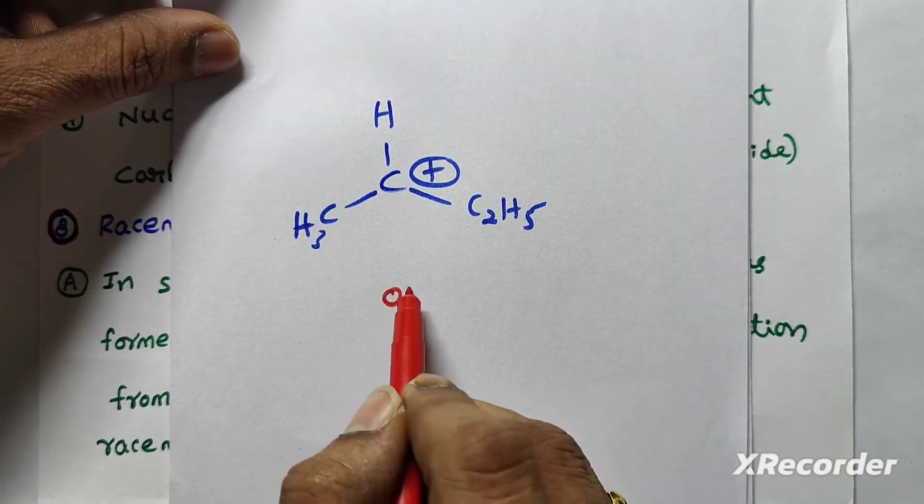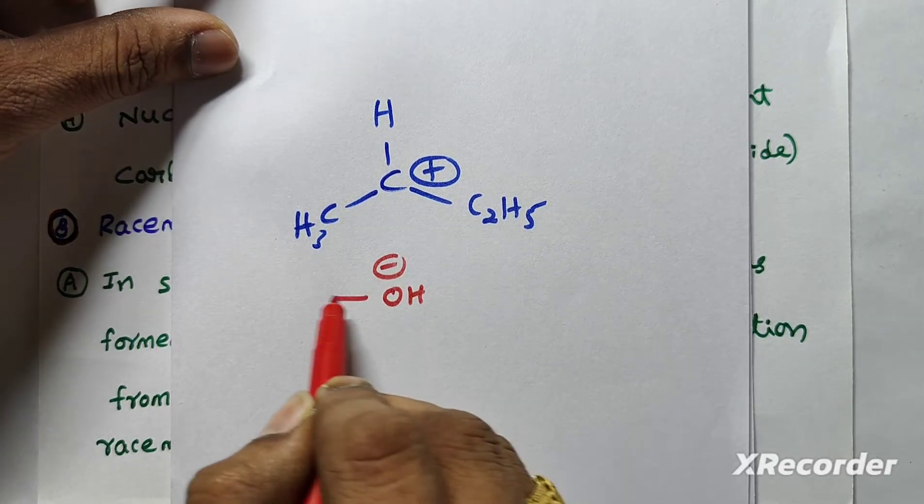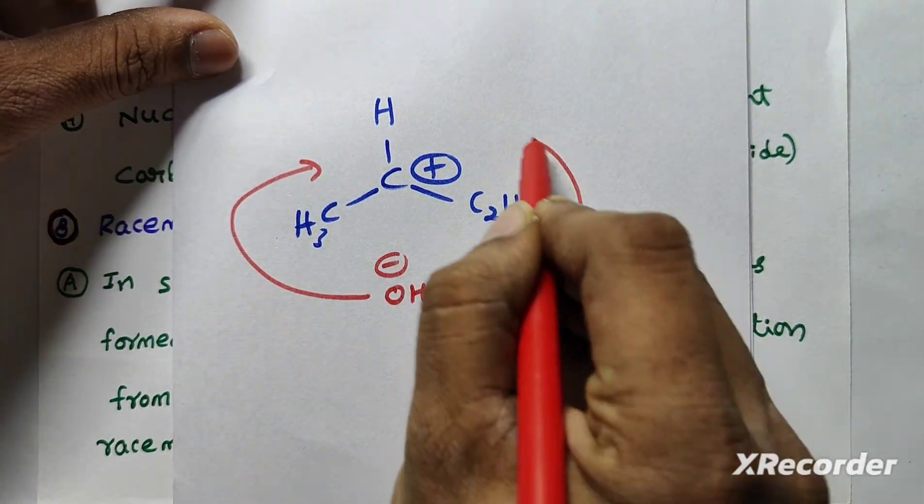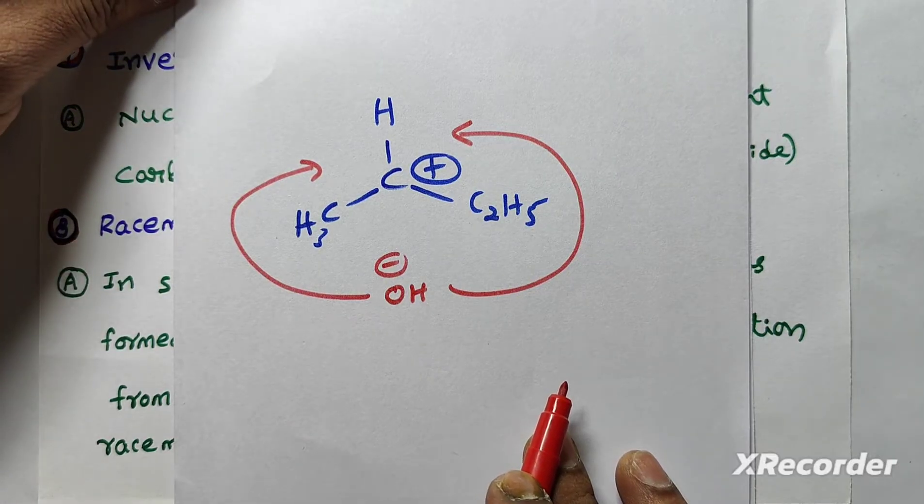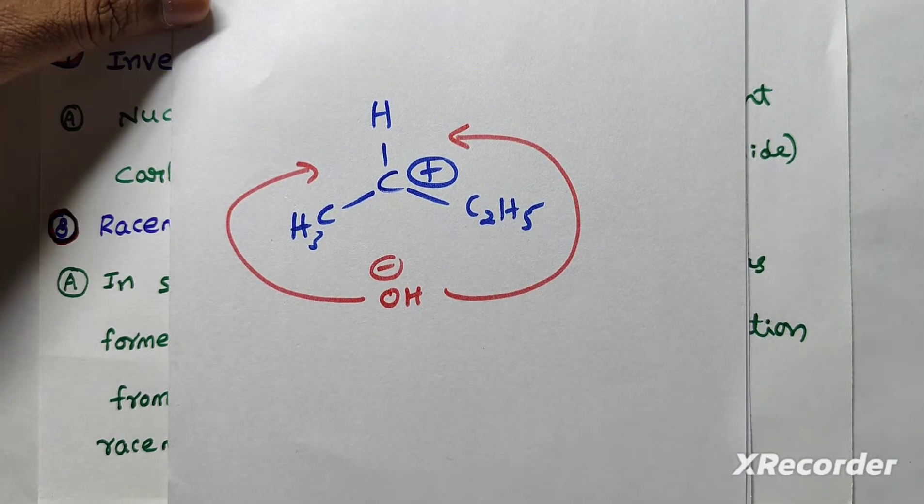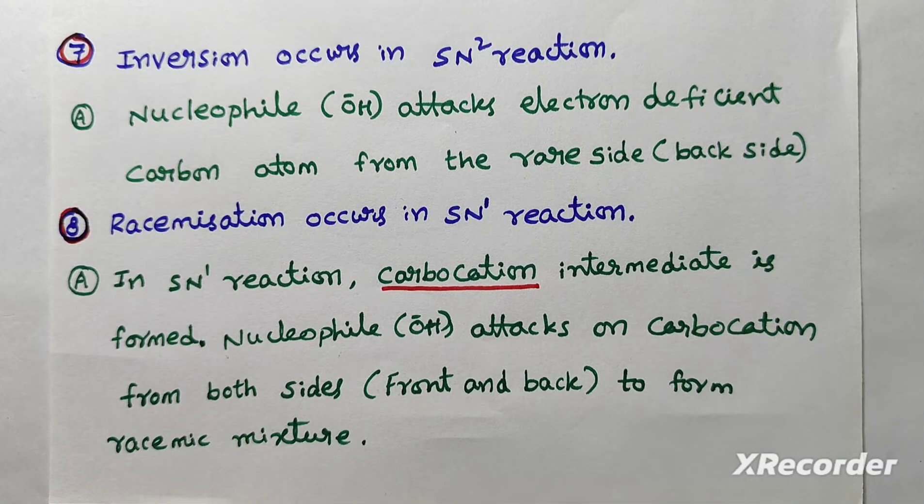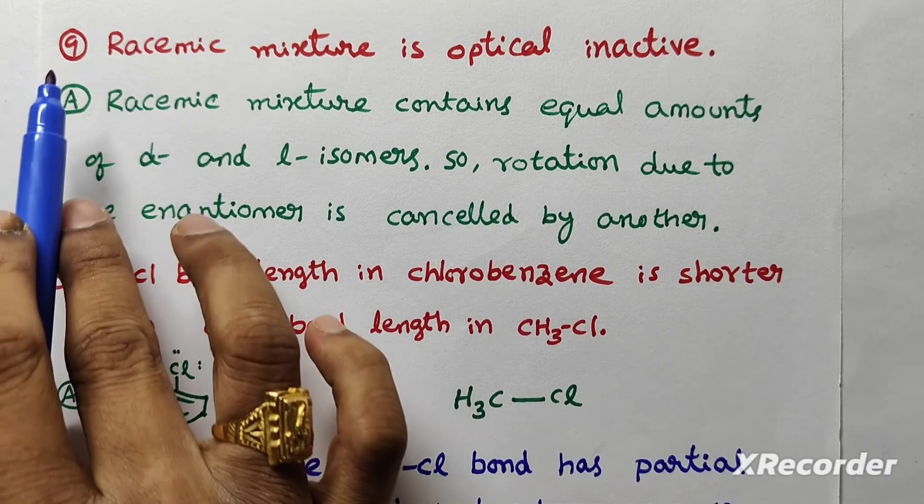This is carbocation. Here, nucleophile can attack from both sides. It can attack from front side as well as back side. It will form the racemic mixture which contains 50% dextro, 50% levo.